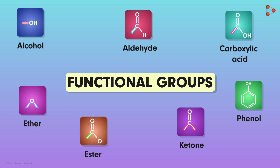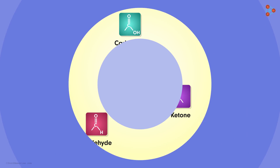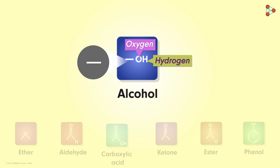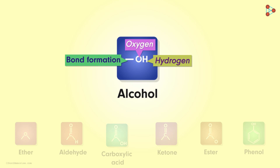Let's understand this in a simple way. Say we focus on the structure of alcohol. This functional group has one oxygen atom and one hydrogen atom. That means a hydroxyl unit is what makes up the alcoholic group. Can you notice that we've drawn a line before oxygen here? It indicates that the group is available for bond formation.